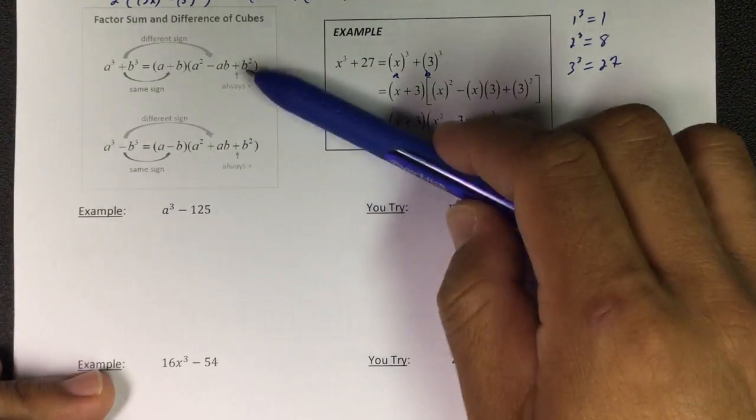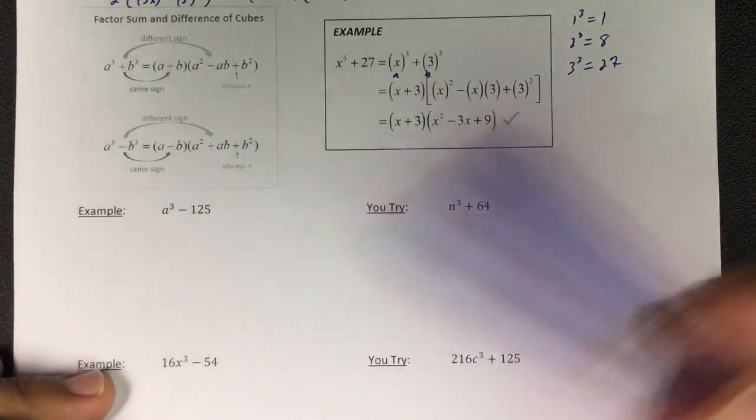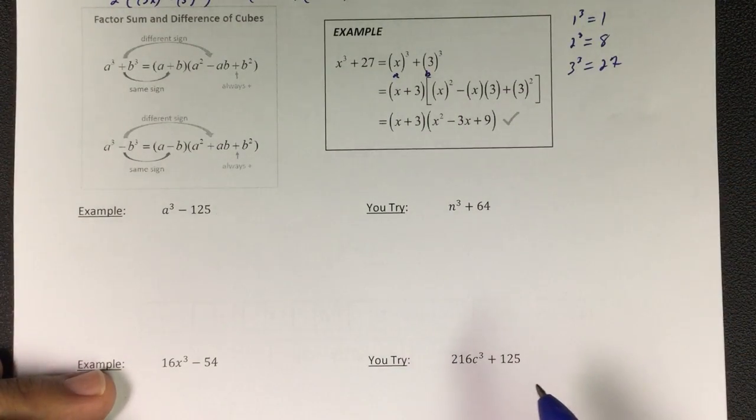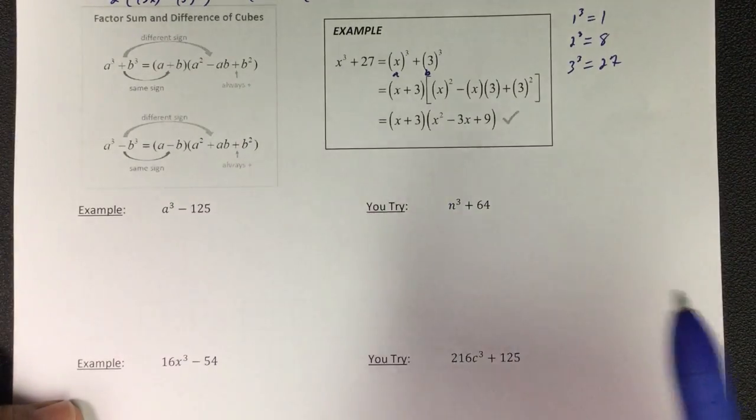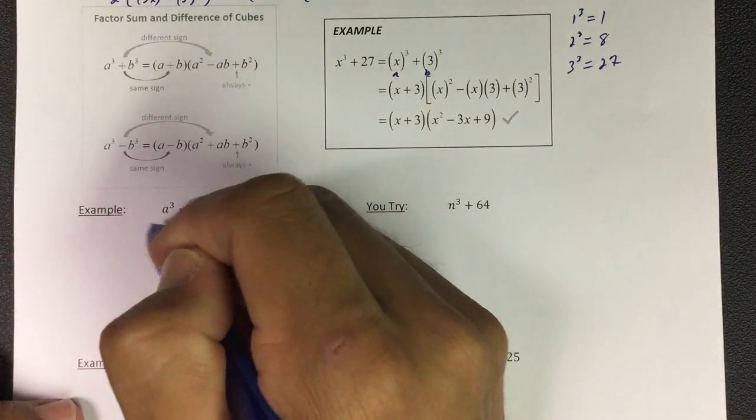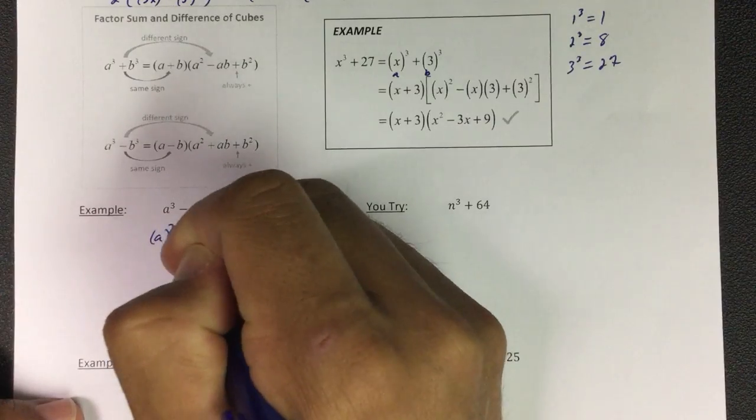Then the second sign goes on the trinomial, and then the last one is always plus. You can see how they're very similar. It's really easy to do both of these at the same time. If I look right here, what is this? It is a to the third power.